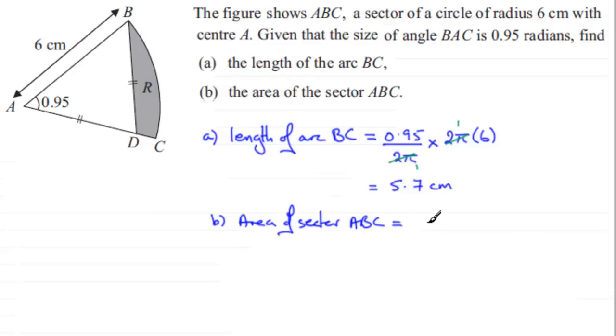And that fraction will again be the angle, 0.95, compared with the amount of radians in one complete turn. So it's this fraction of the area of a circle. And the area of a circle is πr². And the radius in this example is 6, so we've got π times 6².